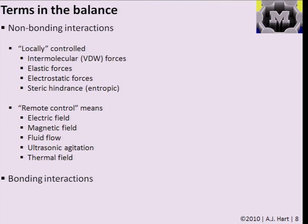We also haven't addressed methods of applying remote control—using an external force or field applied to the environment to tune one of these interactions or adjust the balance among them. This could include applying electric or magnetic fields if particles have magnetic properties, applying fluid flow, agitation such as ultrasonic vibration to shake particles outside of ill-fitting holes into better-fitting ones, or changing the temperature. We'll see examples of some of these today.